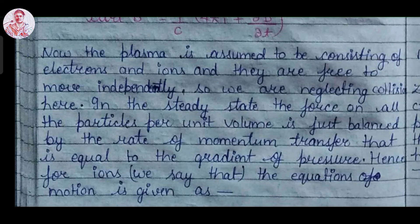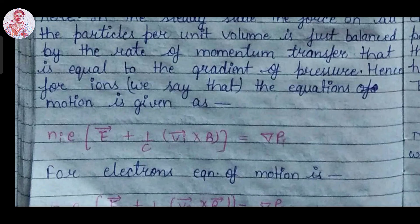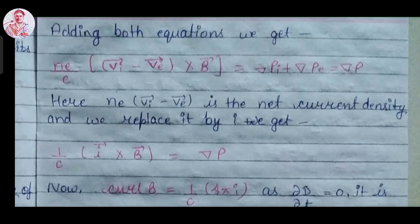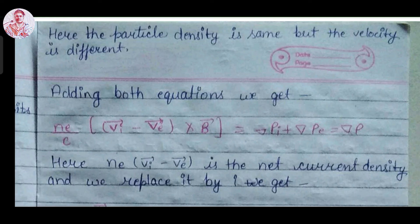For the ions, the equation of motion is: N_i e (E plus 1 over C times V cross B) equals del dot P. For electrons, the equation of motion is: minus Ne (E plus 1 over C times V cross B) equals del dot P. Since N_i e equals Ne equals N at the condition of equilibrium, the particle density is the same but the velocity is different. Adding both equations, we can write: Ne over C times (V_i minus V_e) cross B equals del P_i plus del P_e equals del P.